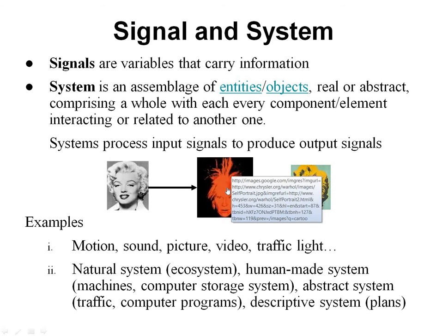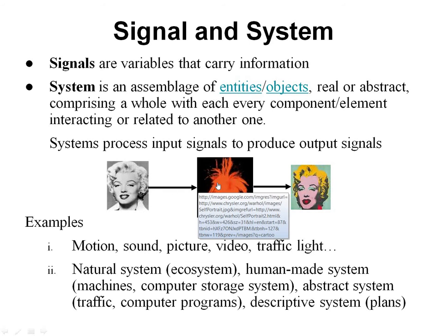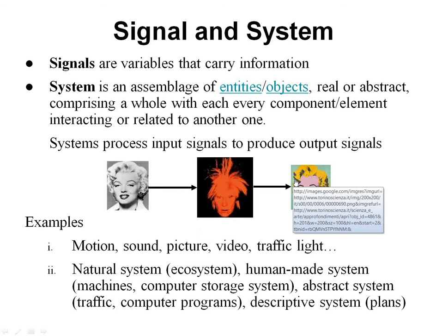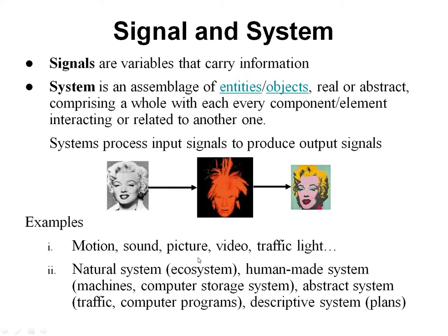Here you have a system where an image is given as an input to a system and it produces an output image. So the system does the process of brightening the image, increasing the contrast of the image, color of the image and so on. Different types of systems we have: natural systems, human-made systems, abstract systems and so on.